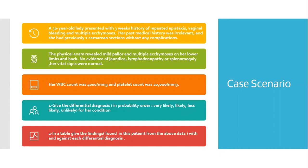We have two tasks. The first one is to give the differential diagnosis in probability order — very likely, likely, less likely, or unlikely — for her presentation. The second task is to present, in a table, the findings in this patient and, from the above data, what is for and against each differential diagnosis.